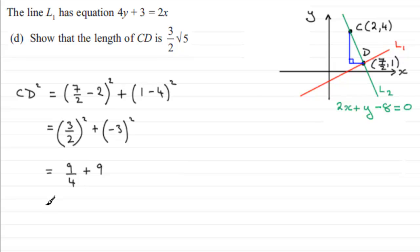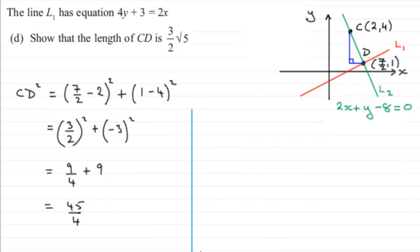For the purposes of this type of question I'm going to change 9 to quarters — that's 36 quarters. So 36 quarters plus 9 quarters is going to be 45 quarters. Now I have CD squared. All I need to do is square root both sides: CD equals the square root of 45 over 4.